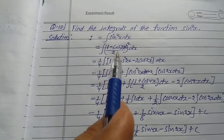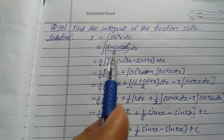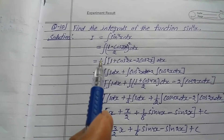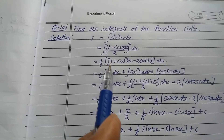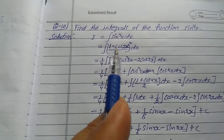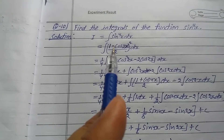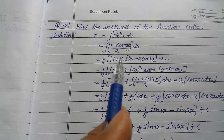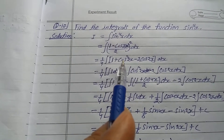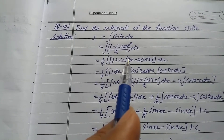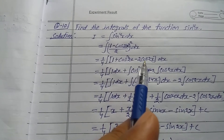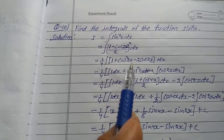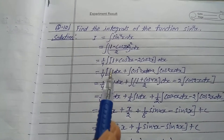The whole square of 1/2 gives 1/4. So taking 1/4 as a common factor, we get (1/4) times the integration of (1 - cos2x)² expanded as 1 + cos²2x - 2cos2x dx.